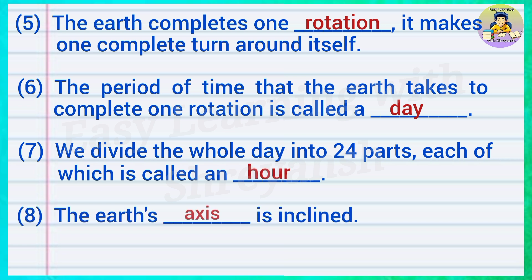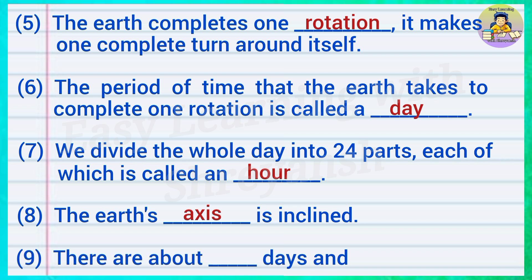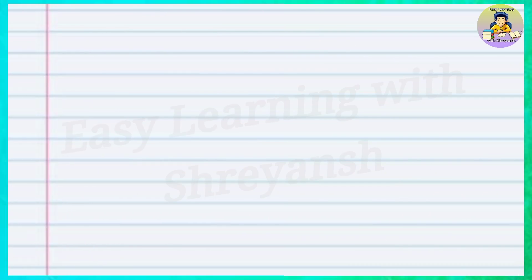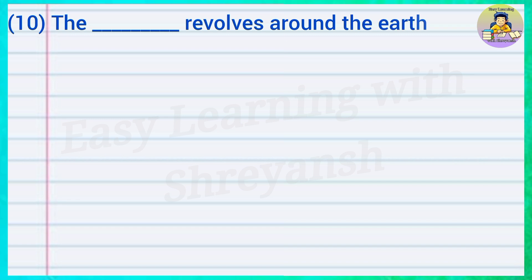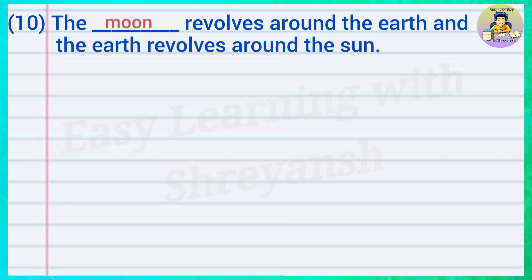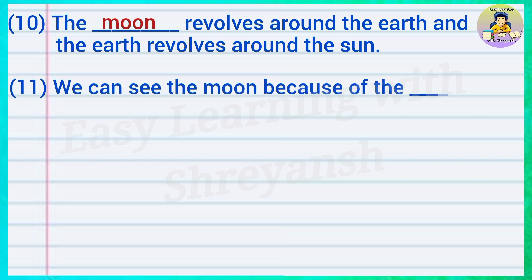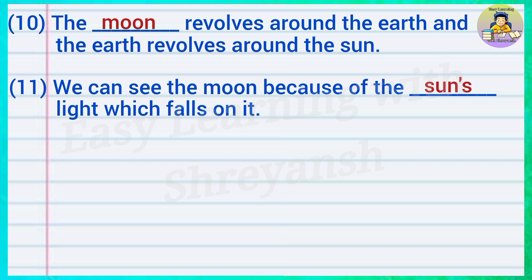Eight: The earth's — is inclined; answer: axis. Nine: There are about — days and six hours in a year; answer: 365. Ten: The — revolves around the earth and the earth revolves around the sun; answer: moon. Eleven: We can see the moon because of the — light which falls on it; answer: sun's.